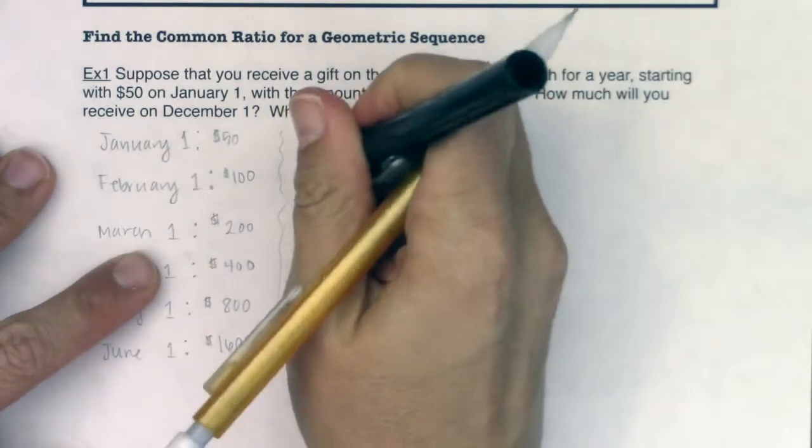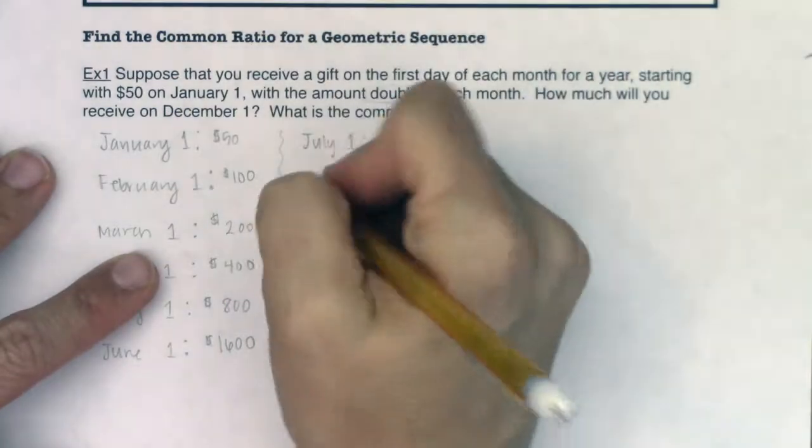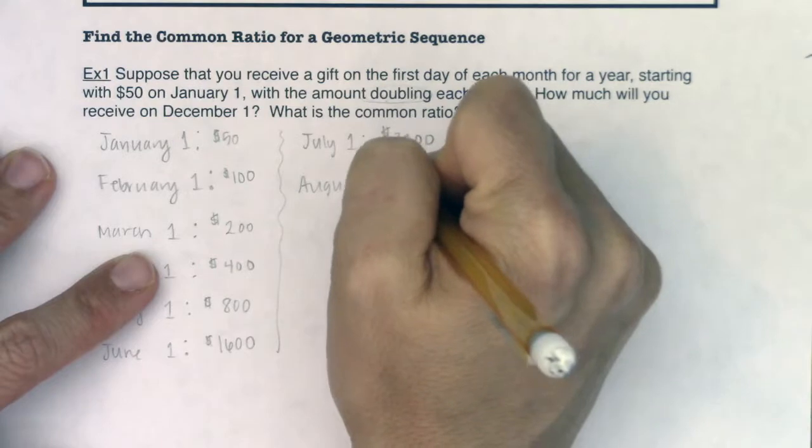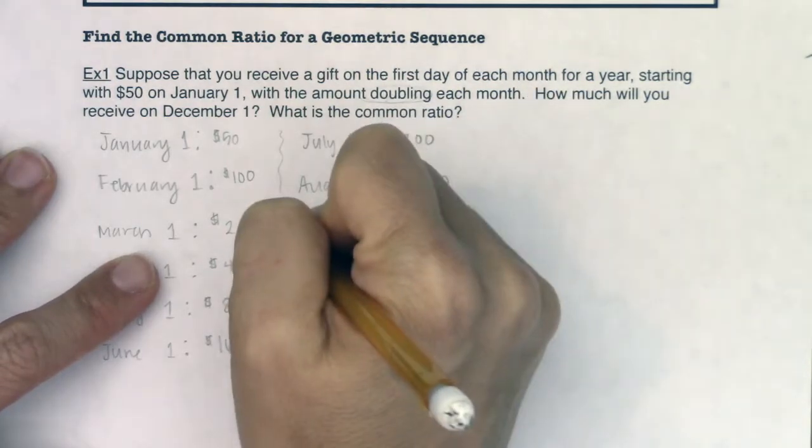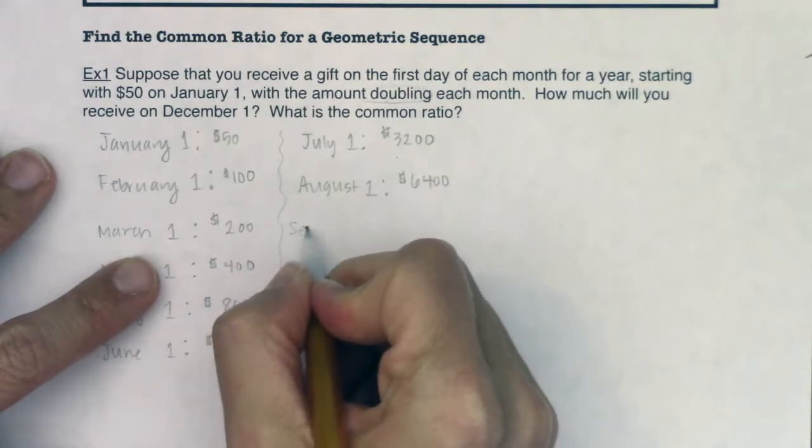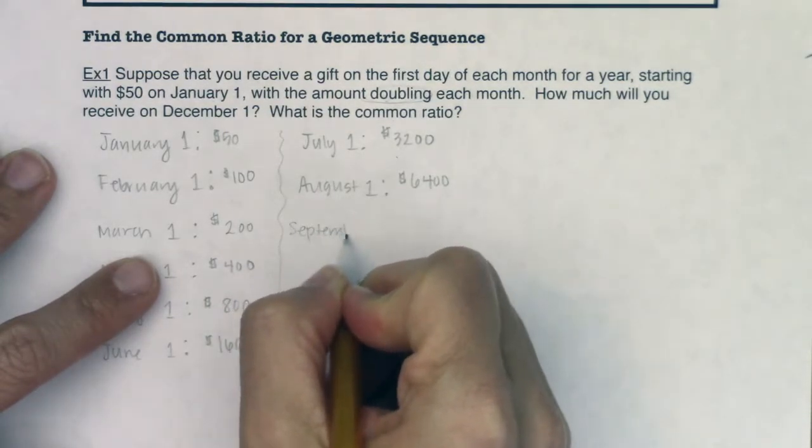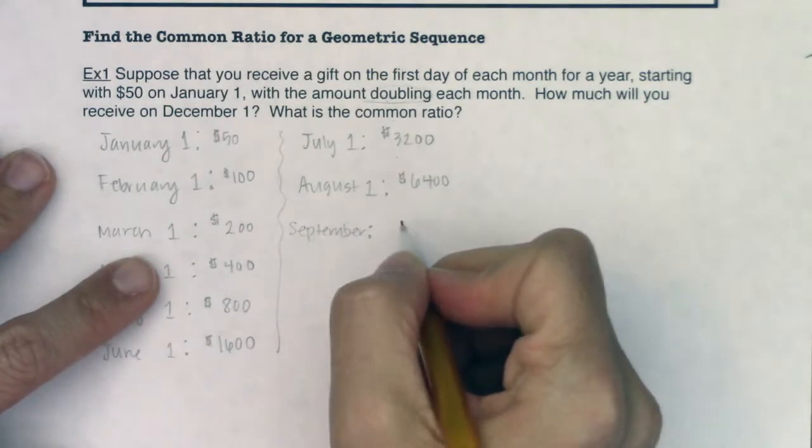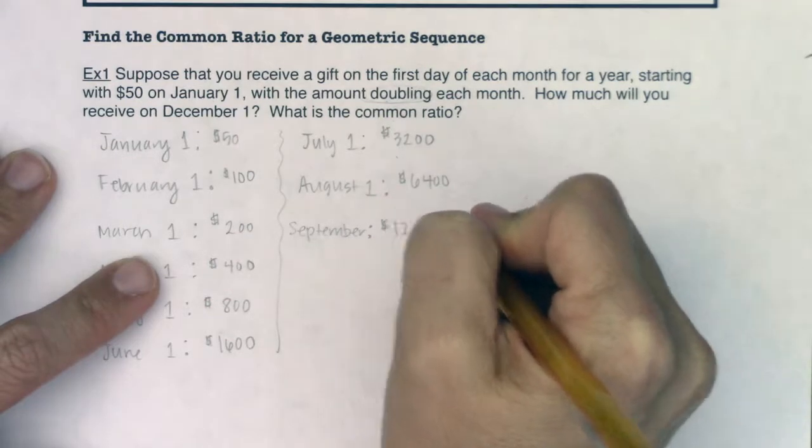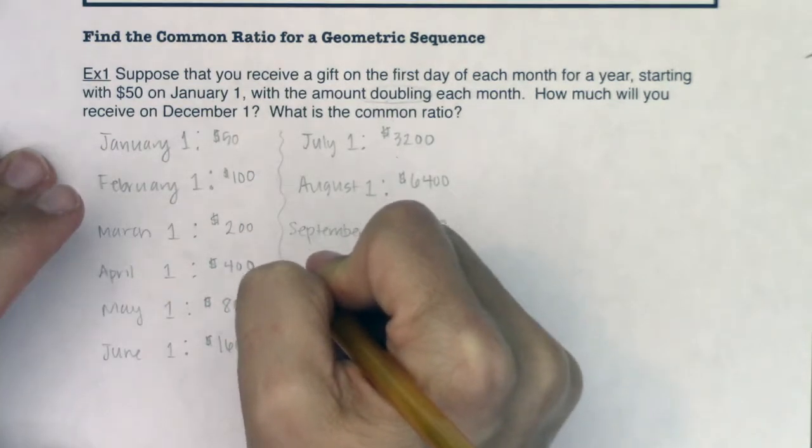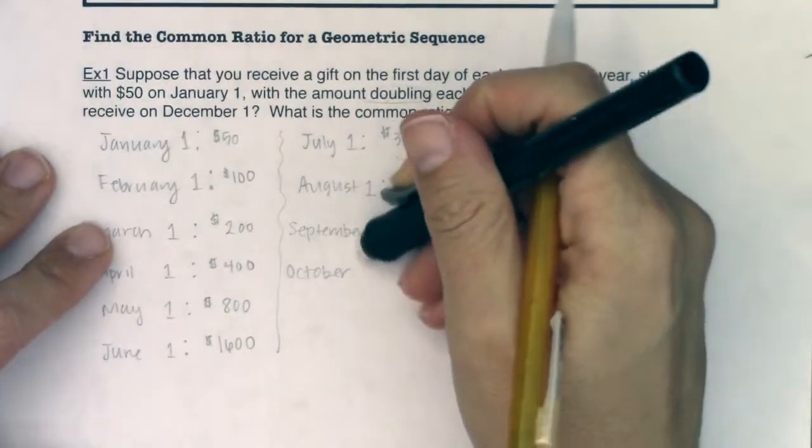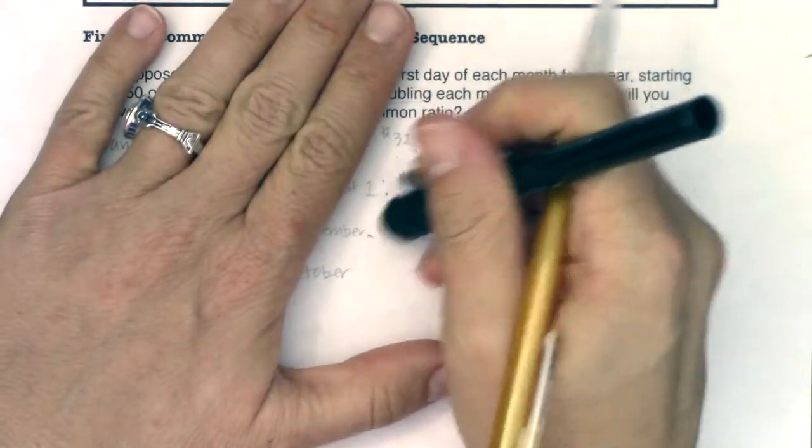July is not the next month, August is. So on August 1st, I'm going to receive $6400. Now we're getting into some fun money. Okay, so August, September. When I multiply $6400 by 2, I'm now up to $12,800. Let's see, we have October. I'm going to write October, November. Oops, I forgot the first here. Let me finish writing out my months, and then I'll go find the amounts.